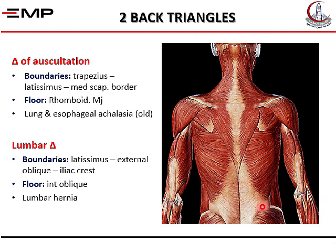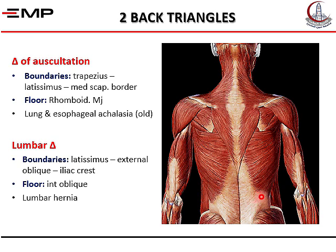The other triangle is the lumbar triangle. It lies between the latissimus dorsi, the iliac crest, and the external oblique muscle of the abdomen. Its floor is made by the internal oblique muscle. This is considered a weak point in the abdominal wall, where intestine and other contents may bulge through it, causing what we call lumbar hernia.